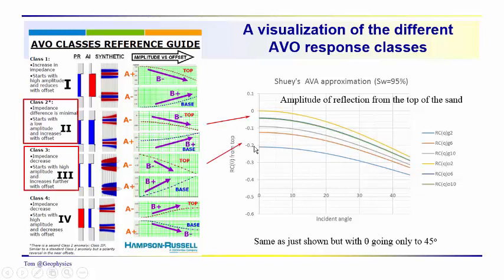Class three, we have a significant impedance contrast, but it increases with offset. And then these are the variations. We're looking at variations from the top, and these diagrams over here also include variations from the base. So we see a decrease across the top for the class two, and we would also see an increase across the base as we go from low velocity to higher velocity in the shale. Likewise for all of these.